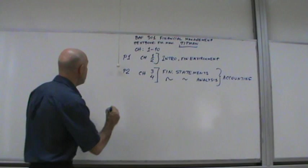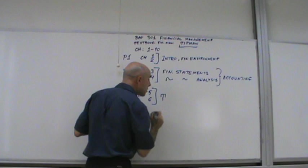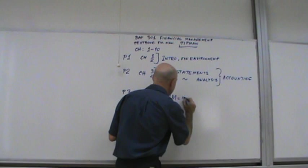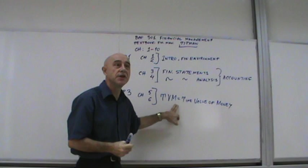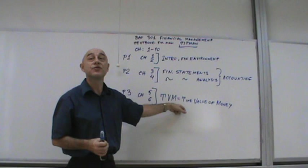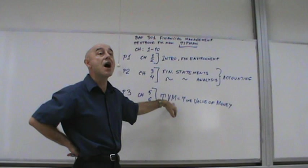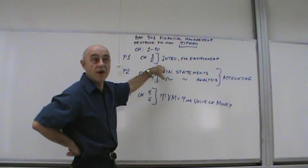Now, part number 3 will be chapters 5 and 6. It is shortened as TVM, standing for time value of money. This is usually the killer for most students. This is where most students fail. It's a bitch, you know, it sucks real bad. But you'll have to learn it. And what happens is a lot of textbooks move this early on. I've been thinking to do the same here, to get this time value of money and put it up front.